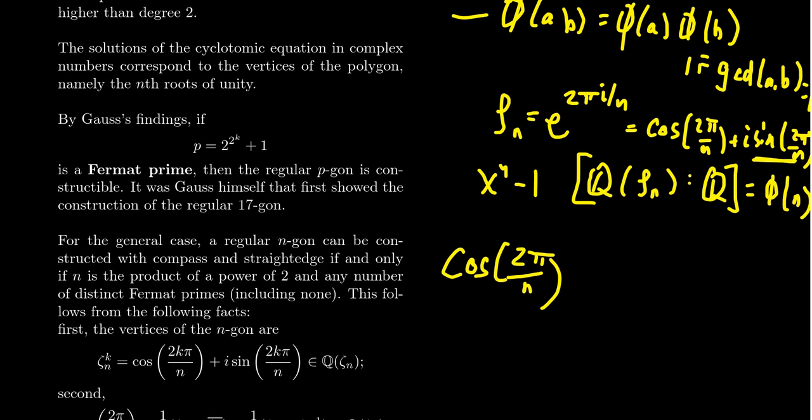This conversation of Fermat primes comes into play because a Fermat prime has the property that phi of p, so you take 2 to the 2k plus 1 here. Since it's a prime, this is going to be 2 to the 2k, like so. So for phi of a Fermat prime, it's a power of 2.